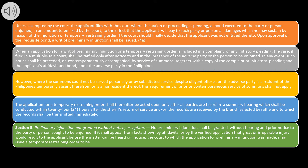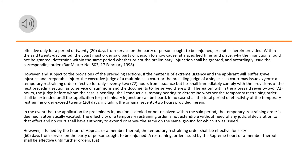Section 5. Preliminary injunction not granted without notice, exception. No preliminary injunction shall be granted without hearing and prior notice to the party or person sought to be enjoined. If it shall appear from facts shown by affidavits or by the verified application that great or irreparable injury would result to the applicant before the matter can be heard on notice, the court may issue a temporary restraining order to be effective only for a period of 20 days from service on the party or person sought to be enjoined. Within the said 20-day period, the court must order said party or person to show cause, at a specified time and place, why the injunction should not be granted, determine within the same period whether or not the preliminary injunction shall be granted, and accordingly issue the corresponding order.